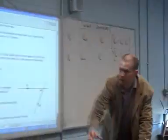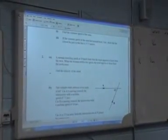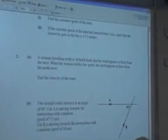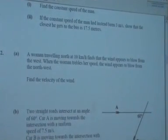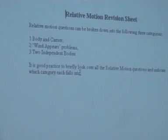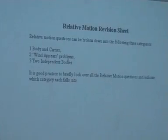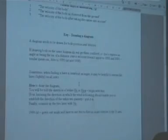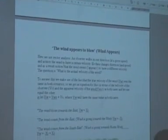There's the question we're going to be looking at, which is 2003. But to go back to the instructions that I've given you, there's a revision sheet. I said you could break it up into three different categories for revision purposes: body and carrier we've looked at, wind appears to blow is what we're looking at now.